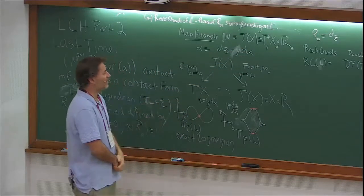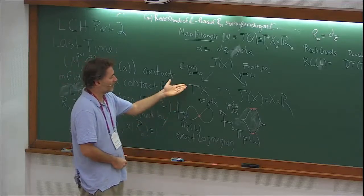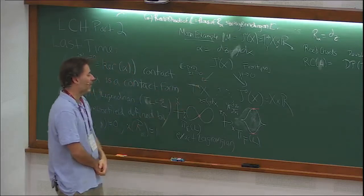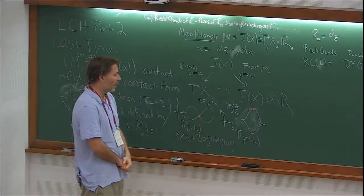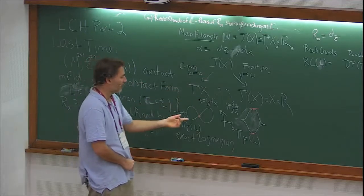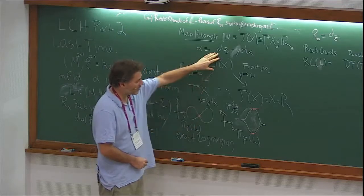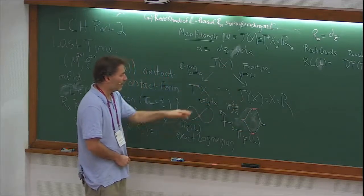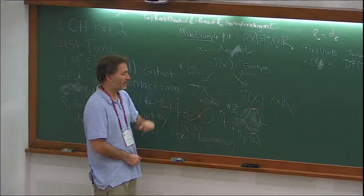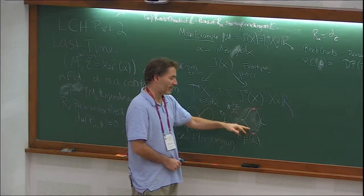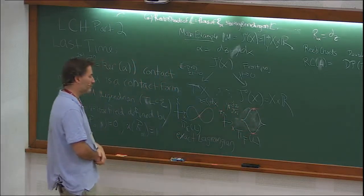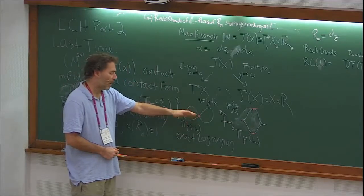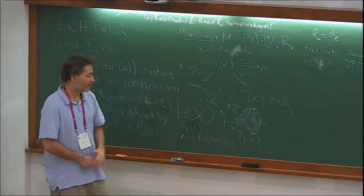The nice thing about this example is that there are two projections: the Lagrangian projection, where you project out the z-coordinate, and the front projection, where you project out the momentum y-coordinates. If you take a Legendrian L and draw its projection in either space, you can recover L from the projections — in the Lagrangian case by integrating y dx to get the z-coordinate, and in the front case by differentiating z with respect to the xi to get the yi coordinates. This is useful for computational reasons and for analytic reasons in holomorphic curve theories.